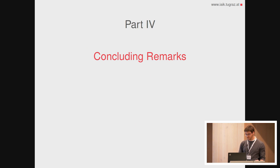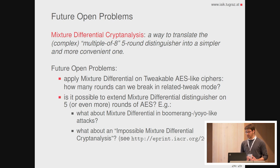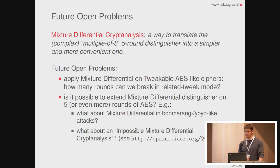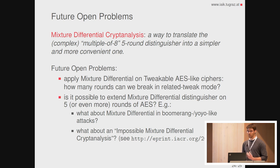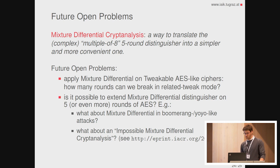To conclude: we started with the multiple-of-eight property and found a way to translate it into a simpler and more convenient distinguisher that can be exploited to set up key recovery attacks. Obviously the work is not finished. There are many open problems — for example, what happens if we apply this distinguisher to tweakable AES like SKINNY? Can we exploit the freedom of the tweak or work in related-tweak mode to break more rounds? What about AES-PRF or fork-AES? What about trying to extend this distinguisher, for example by combining it with a boomerang attack? Or what about an impossible mixed differential — exploiting properties that hold with probability zero rather than probability one?